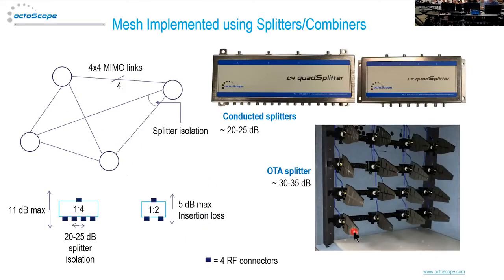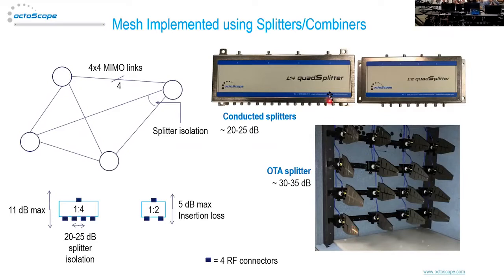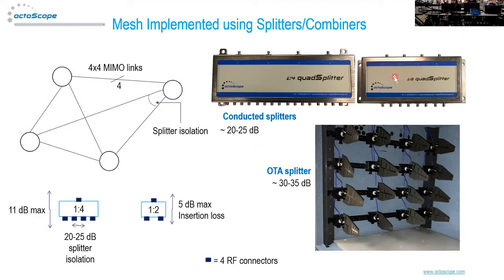There are two basic ways to connect nodes in a testbed: conducted, using splitters and combiners, or over the air. We use MIMO splitters — four-by-four — where these four terminals share a common port. Our diagrams use a small square symbol to represent four connectors on a combiner or enclosure. We can also make splitters and combiners over the air using four-by-four antenna arrays with high-gain antennas, which can be repositioned on ball joints for full angular control.